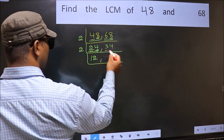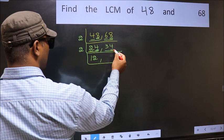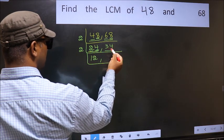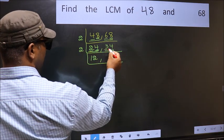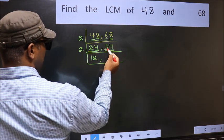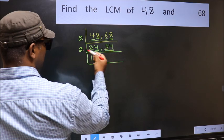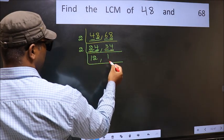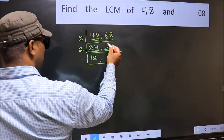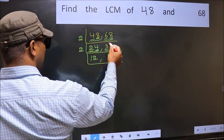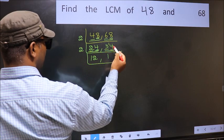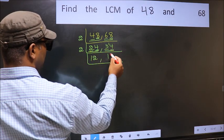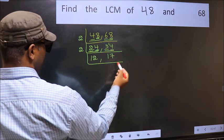Now the other number 34 — last digit is 4, so this is divisible by 2. First number 3 — a number close to 3 in the 2 table is 2, 2 times 1 is 2. 3 minus 2 is 1, carried forward: 14. When do we get 14 in the 2 table? 2 times 7 is 14. So 34 divided by 2 gives 17.